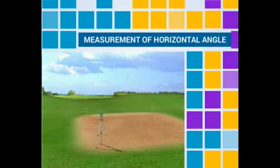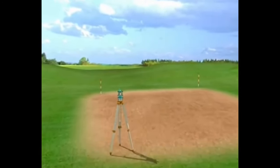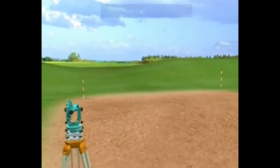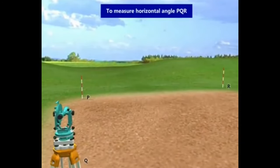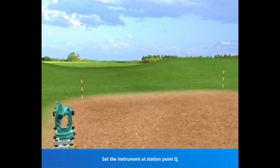Measurement of Horizontal Angle. Let us see how horizontal angle is measured using theodolite. For example, consider we are going to measure the horizontal angle PQR. Set the instrument at station point Q.